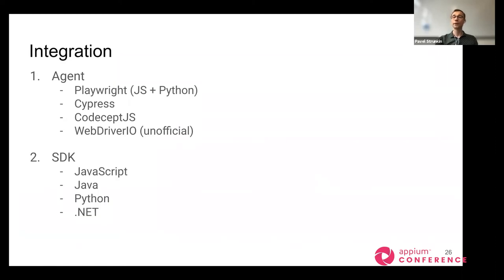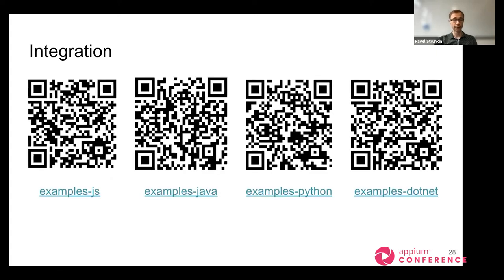If that's not the case, don't worry — you can still utilize the raw programming language SDKs for JavaScript, Java, Python, or even .NET. If you work with different languages, you can still use the service as it provides a REST API, and you would just need to write wrappers over it to send data to the service. For all these libraries we have a set of examples, so feel free to clone the example repository and try it out.